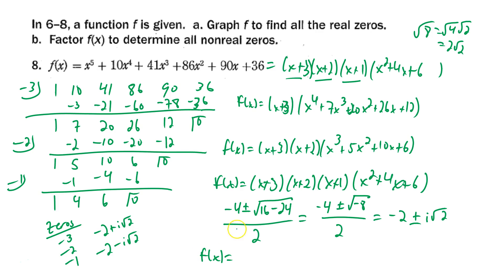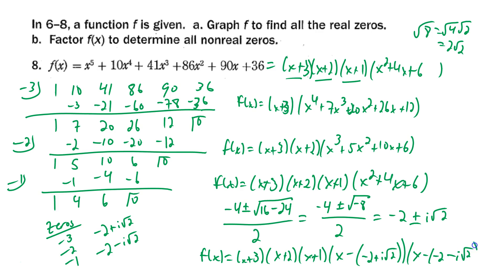The complete factored form is f(x) = (x+3)(x+2)(x+1)(x-(-2+i√2))(x-(-2-i√2)). That was the last problem. Hopefully this was helpful — if you need to go back and review any of the work that's a good idea. This took about half an hour, but you need to practice this stuff. If you have any questions let me know — I'll talk to you soon.